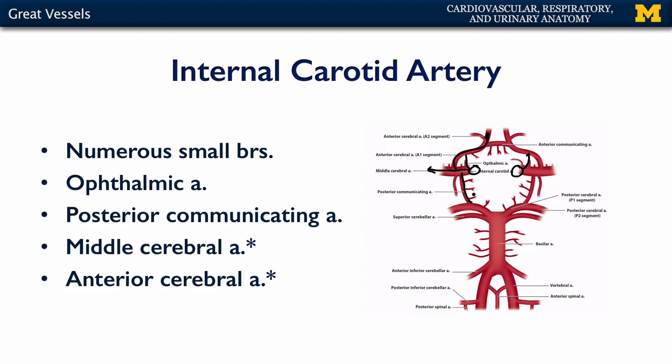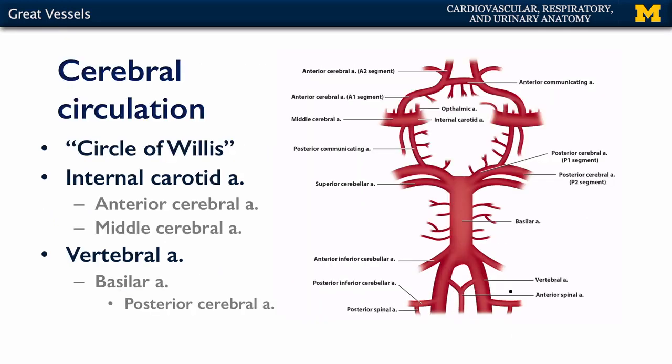These communicating branches are going to be anastomoses with derivatives from the vertebral arteries that come from the subclavian artery. In total, all of the anastomoses and branches from the internal carotid artery and the vertebral artery are known as the cerebral circle, and some people hang the eponym the circle of Willis on this.